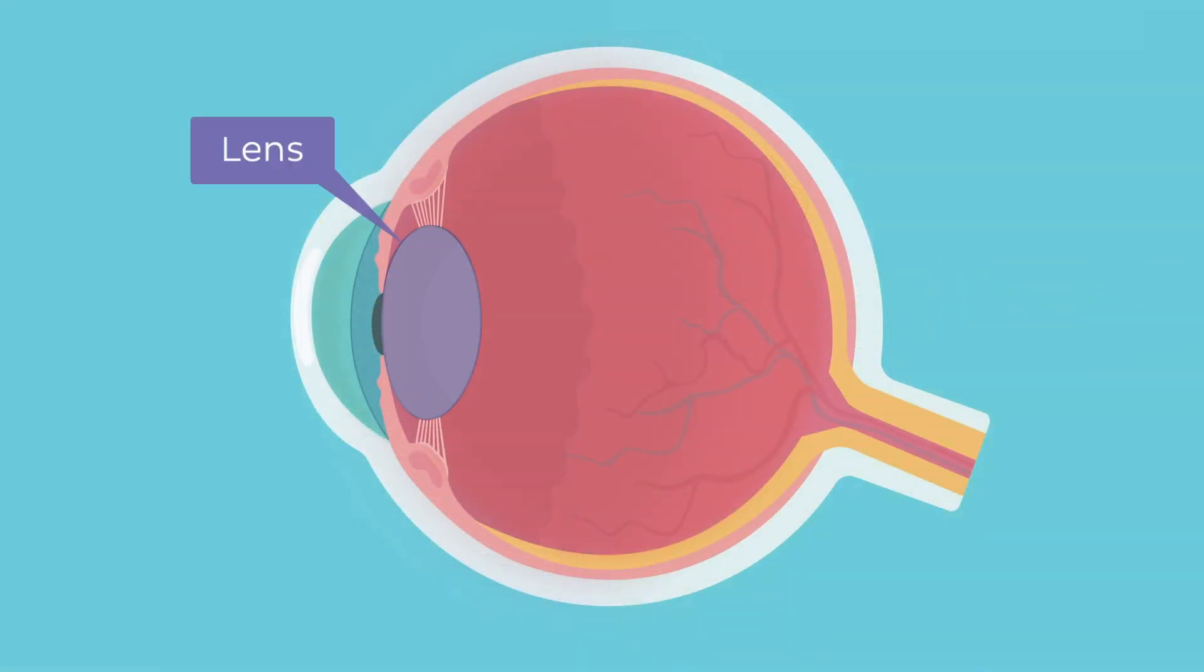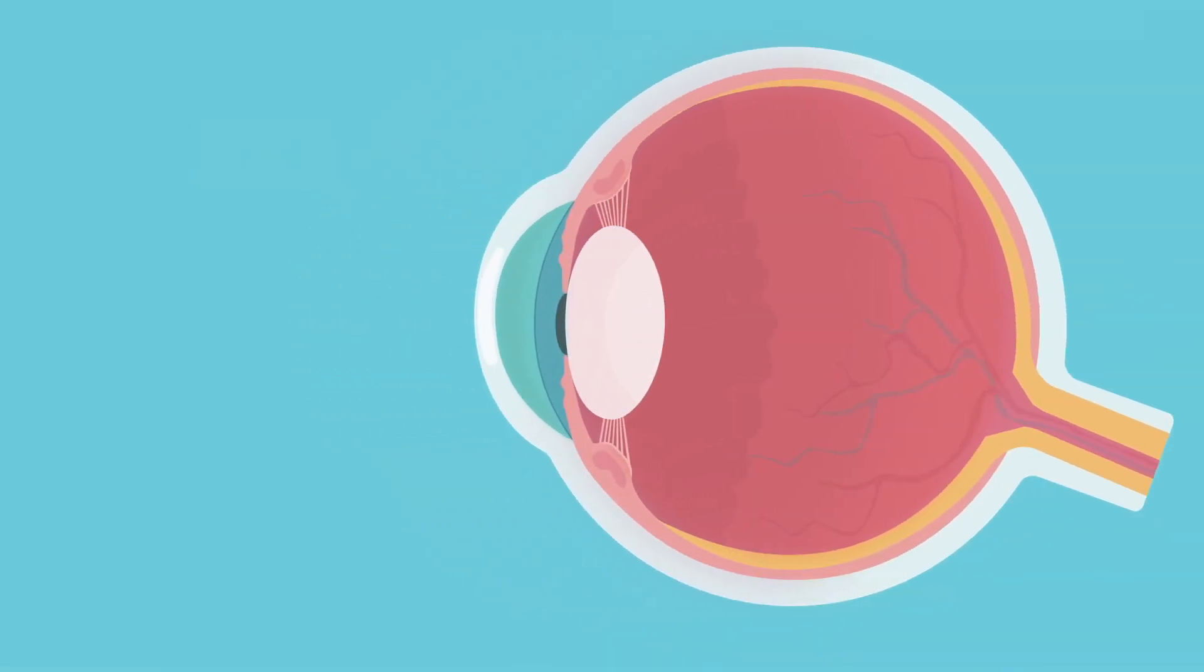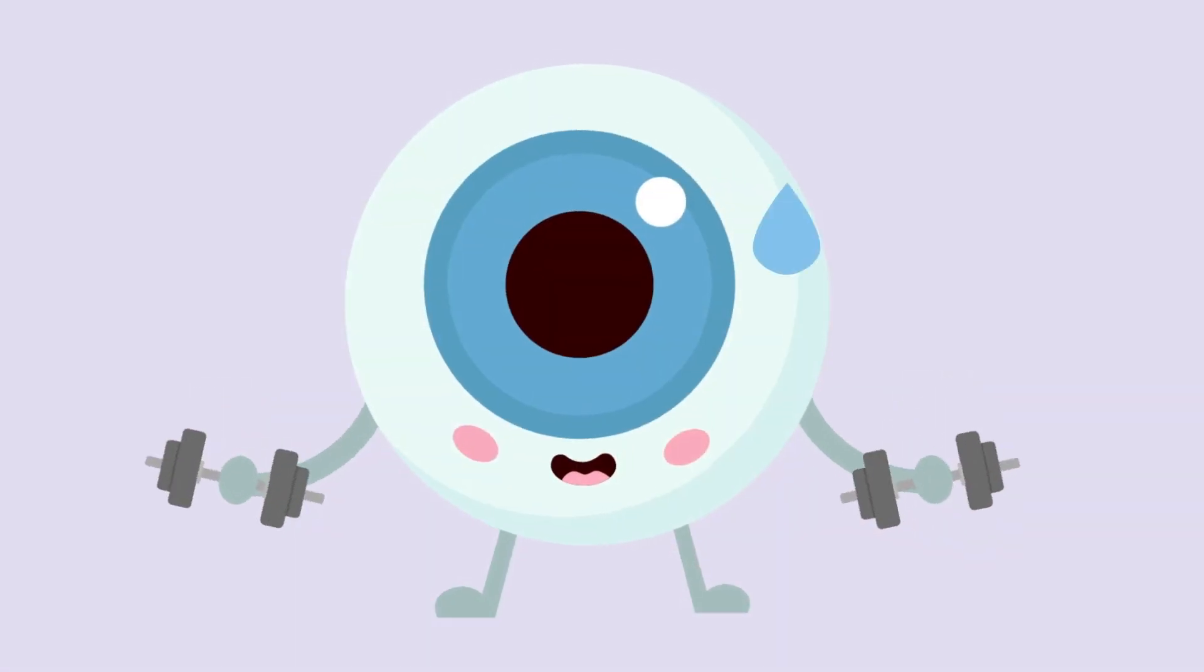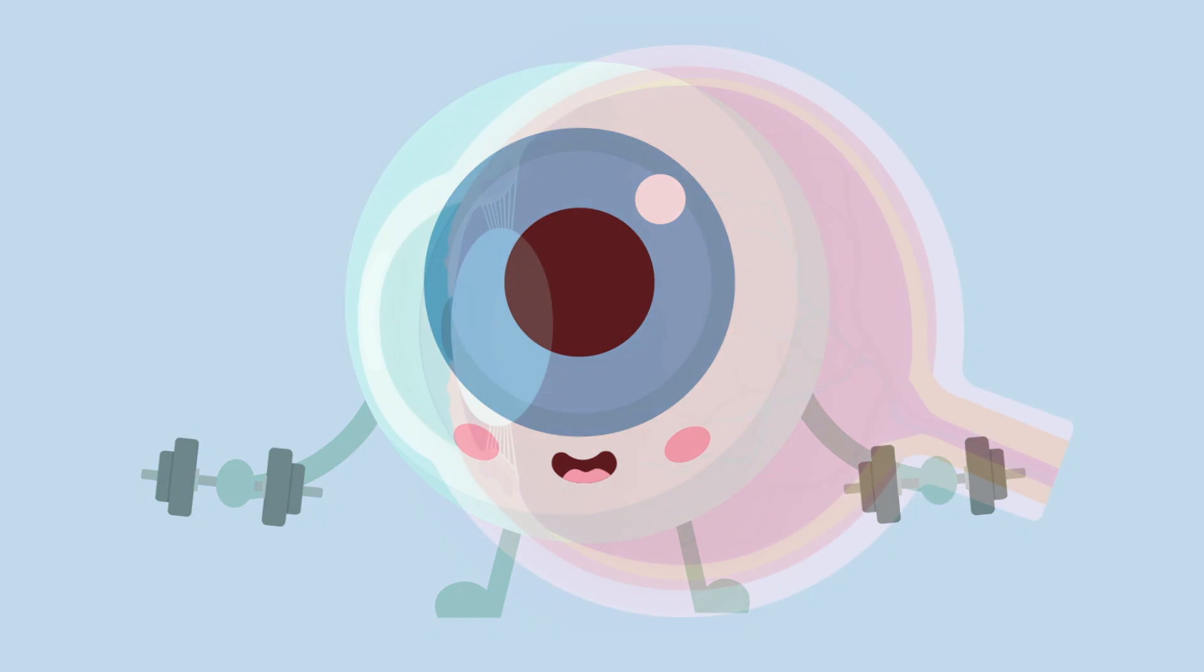Now, the lens could not do that on its own, as it consists basically of protein and water surrounded by a capsule that gives it its biconvex form. And that's where the eye muscles that we mentioned in the beginning of the video spring into action.